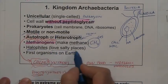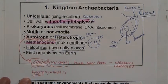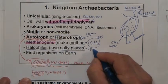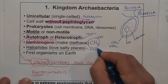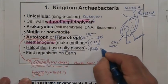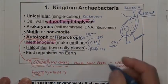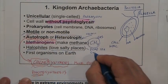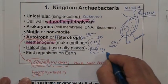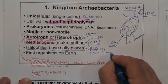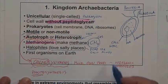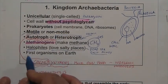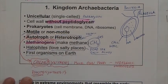Halophiles love salt — they live in very salty places like the Dead Sea, which is extremely salty, or in salt mines where this bacteria grows in the salt. From our previous unit, recall that these were the first organisms on Earth.